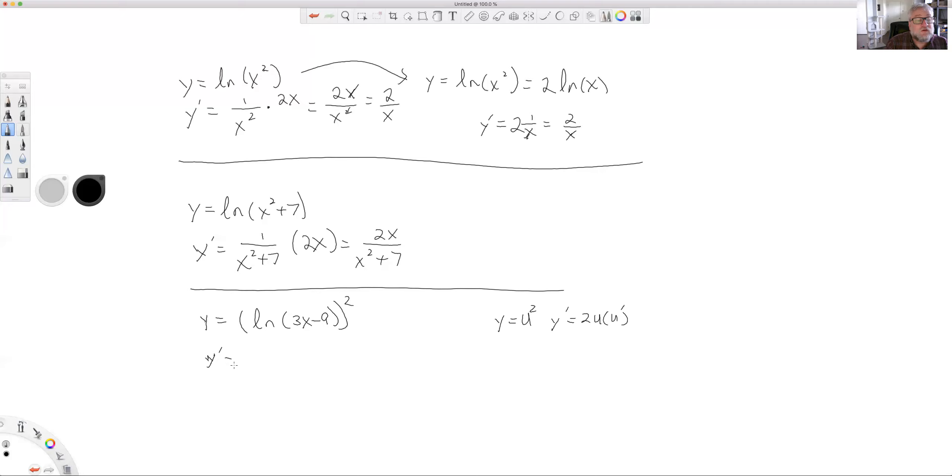y prime is going to be 2 times ln of 3x minus 9 to the first power, times the derivative of the goop in here. u is ln(3x - 9), so the derivative would be 1 over 3x minus 9 times the derivative of the stuff inside the natural log function, which is 3. So if we simplify this, 2 times 3 is 6.